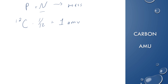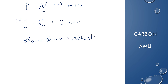If you find the amu for an element, we call that the relative atomic mass, and we abbreviate it as A sub R. You can also find the number of amu for a compound, where you add up all of the elements that make up that compound.